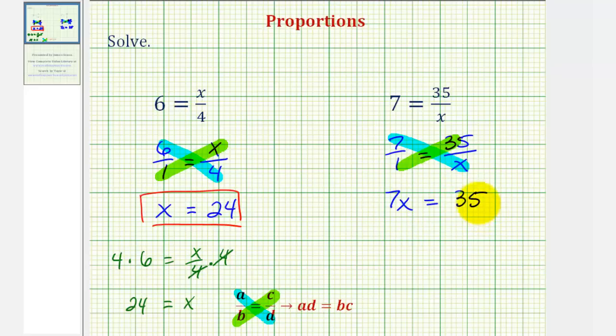Here we have a one-step equation to solve, and since seven x means seven times x, to solve for x, we'll divide both sides by seven. So we have x equals 35 divided by seven, which is equal to five.